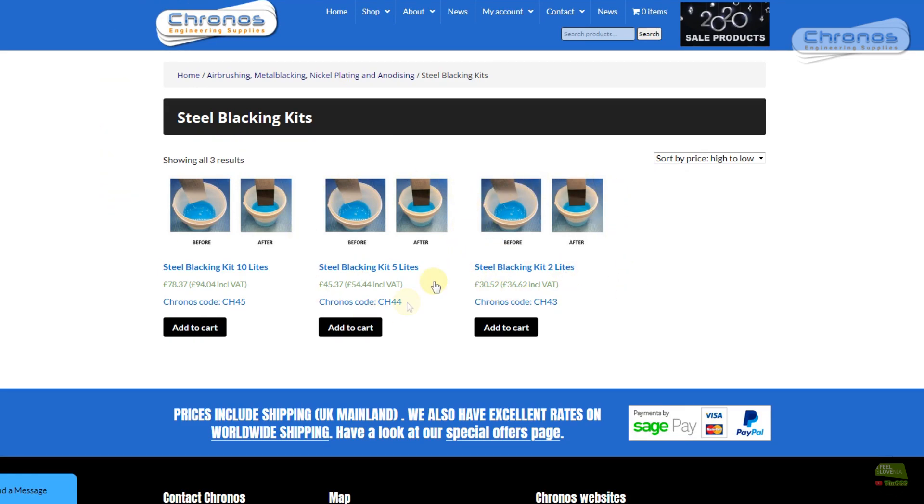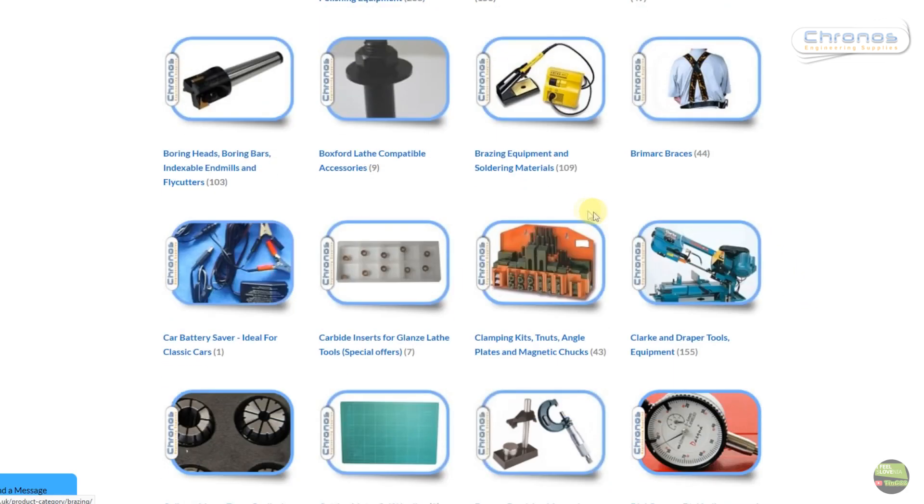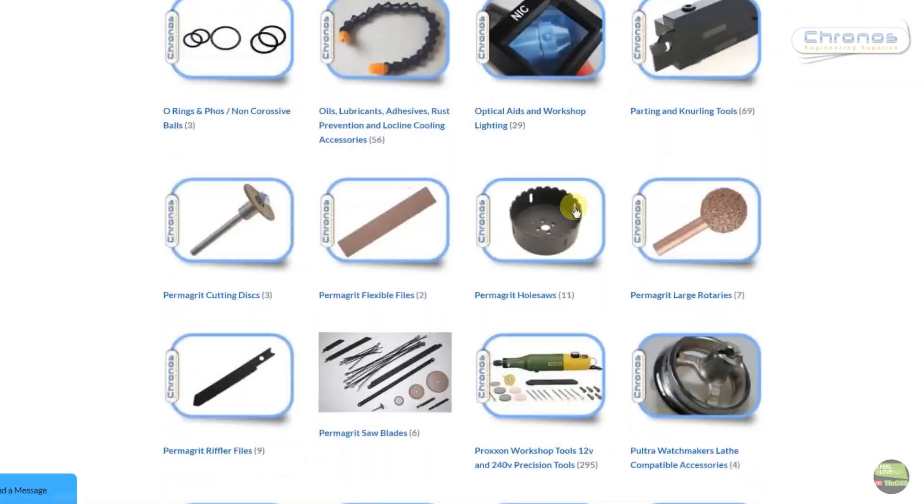They sell this blacking solution in three different packaging. They also sell other kits for anodizing aluminum, zinc plating, nickel plating and so on. And of course they've got lots of tools for lathe, mills and other stuff.